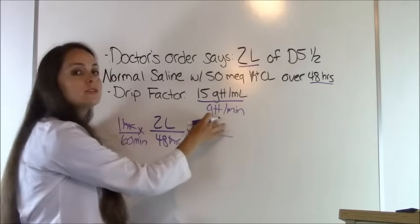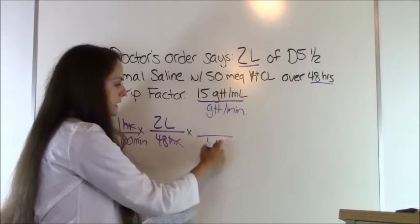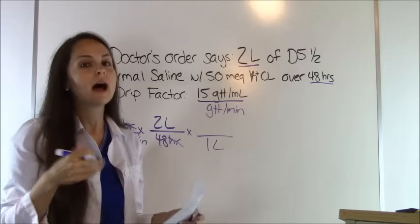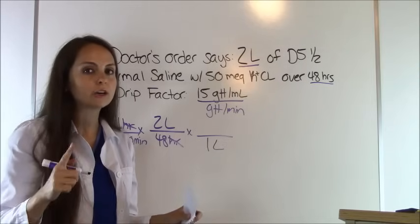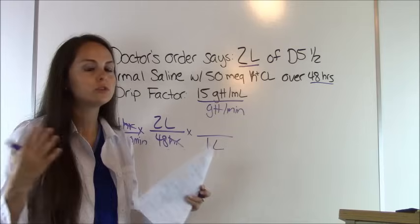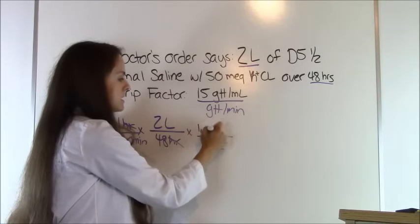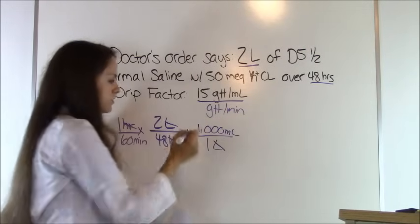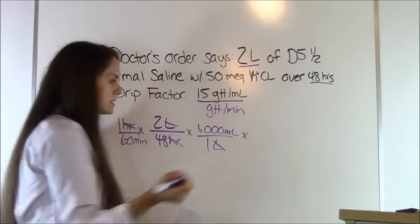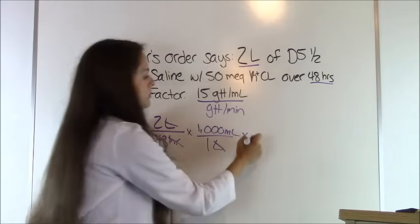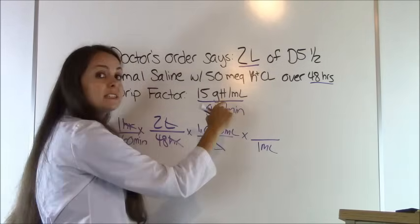In order to get to drops, we need to get to milliliters. From the metric table — something you have to memorize — 1 liter equals 1,000 milliliters. That cancels out liters. We're still in milliliters per minute and need to get to drops, so now we use our drip factor: 1 milliliter equals 15 drops.